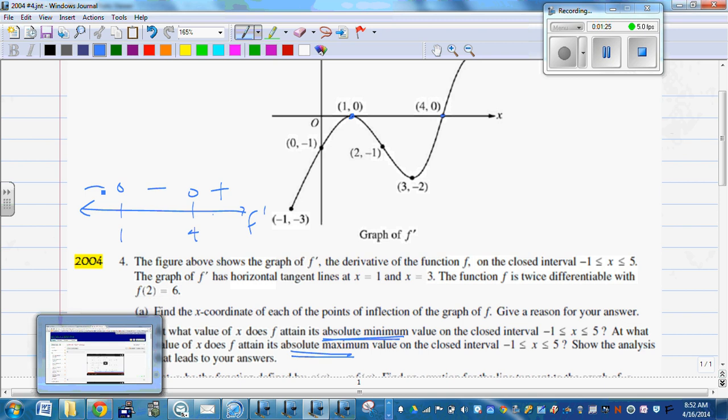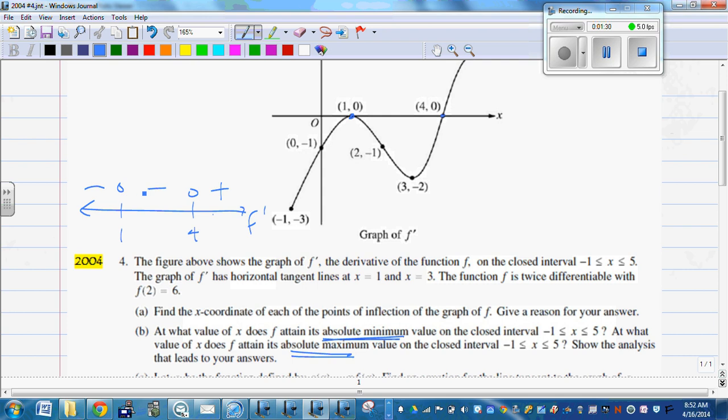So the graph of F is going to be decreasing, then zero slope, then decreasing, and then increasing. We're going to have a graph that goes down, flattens out a little bit, goes down, and then goes up. Well, what kind of a point do we have here at four? Local min, right?